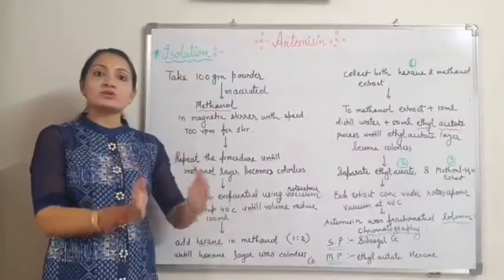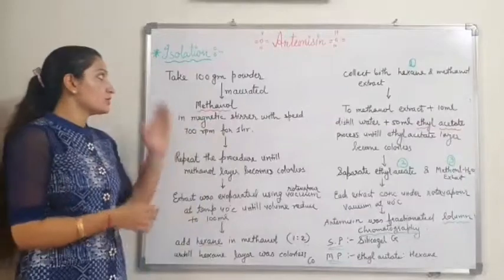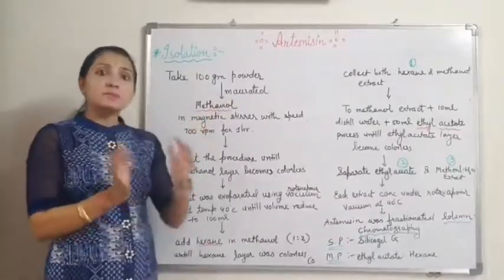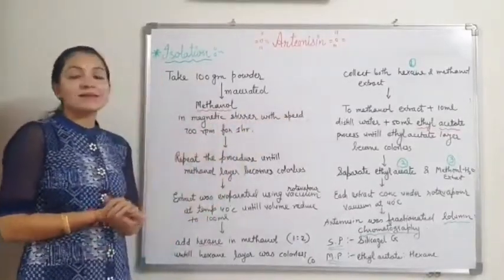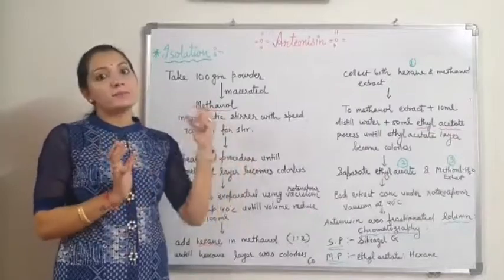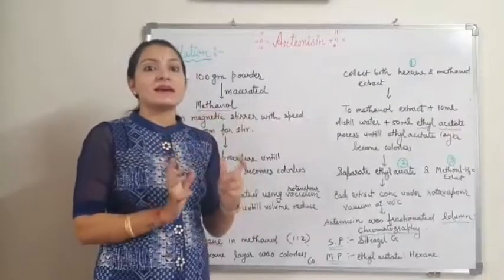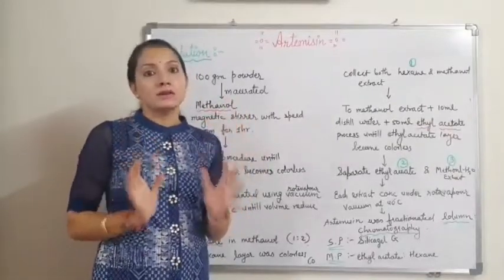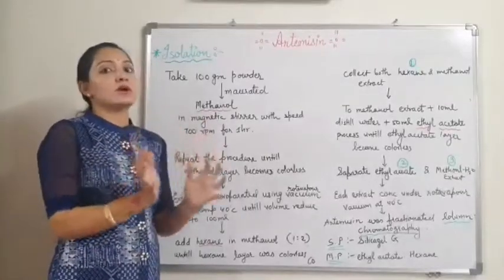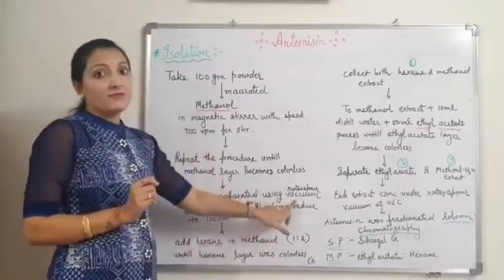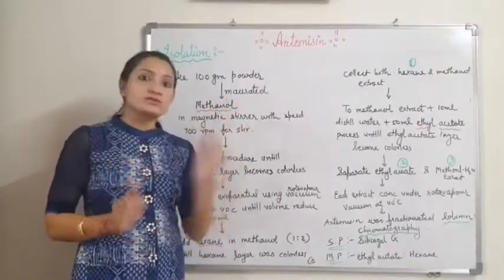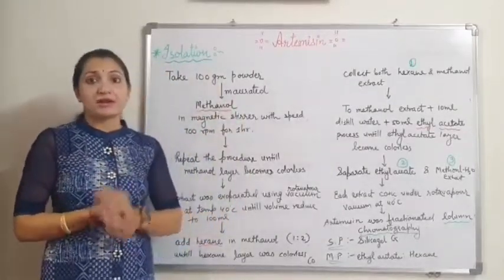Moving on to isolation of Artemisinin from the drug. We take 100 grams of powder and macerate in methanol in a beaker containing a magnetic stirrer at 700 rpm for 1 hour. We repeat the procedure until the methanol solvent becomes colorless. We collect all the methanol extract by filtration and concentrate it using a rotary evaporator under vacuum at 40 degrees Celsius, reducing the volume to 100 ml.